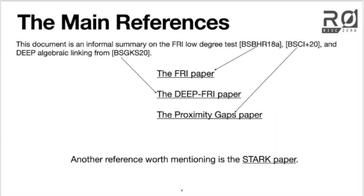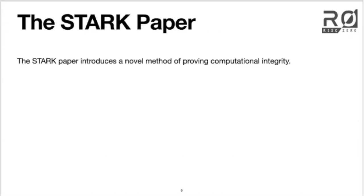Let me unpack a little bit of how these four papers are connected and then continue. The STARK paper is really what we're doing — we have a STARK, and it's a Scalable Transparent Argument of Knowledge. The seal on our receipt is very literally a STARK. A STARK is a way of proving computational integrity, meaning it's a way of convincing a third party that the computation you ran is actually the computation that you said you ran.